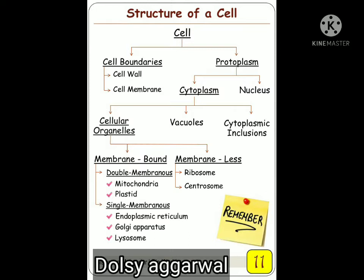Then there is protoplasm. Protoplasm is a fluid material which we see in the cell. We divide it into two parts: one is cytoplasm, which is outside the nucleus, and one is nucleoplasm, which is inside the nucleus. Cytoplasm contains cell organelles, inclusion bodies, and vacuoles. Nucleoplasm is the part of your nucleus.